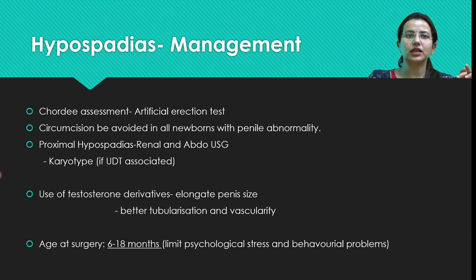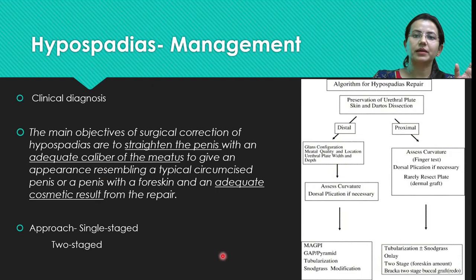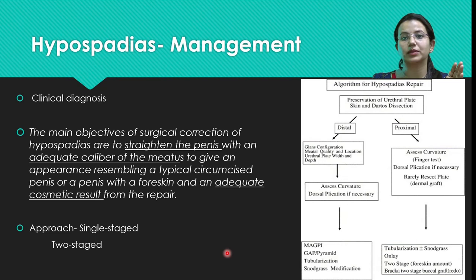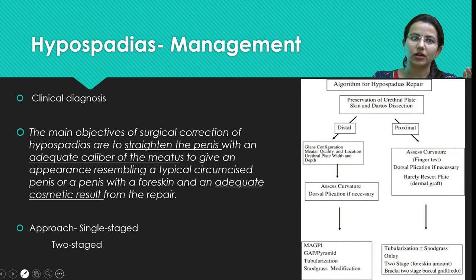The recommended age for surgery is six to eight months to limit psychological stress and behavioral problems. The main objective in management of hypospadias is to straighten the penis with an adequate caliber meatus, give the appearance of a typically circumcised or normal penis, and achieve an adequate cosmetic result. This can be done as a single-stage or two-stage procedure.